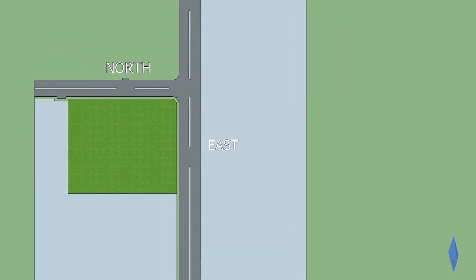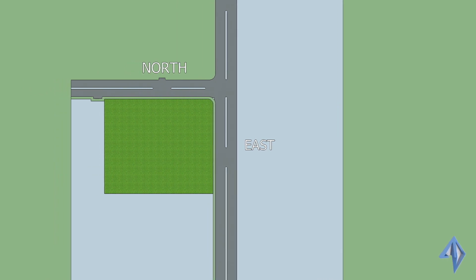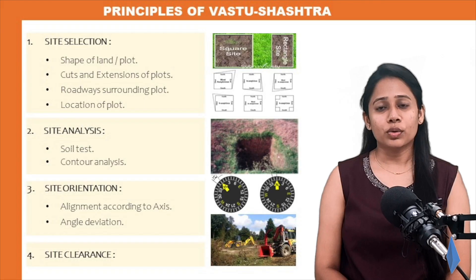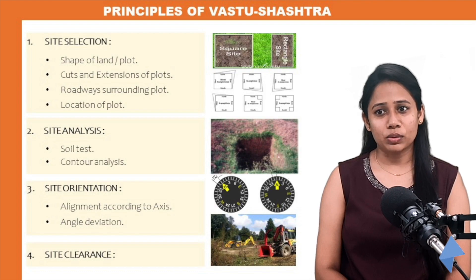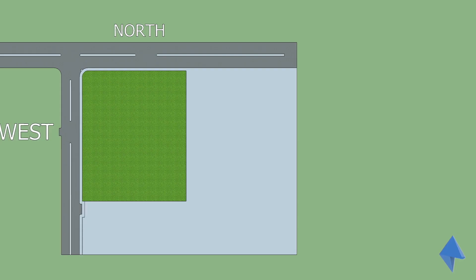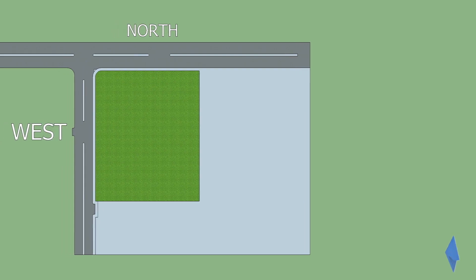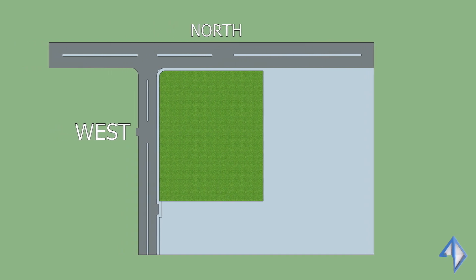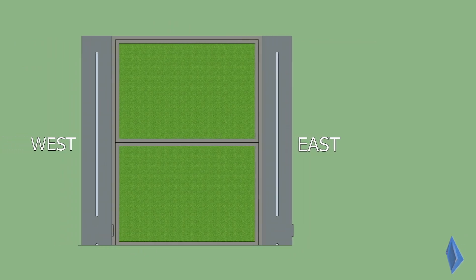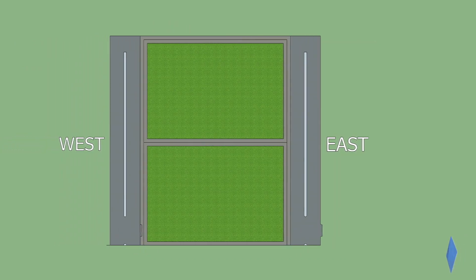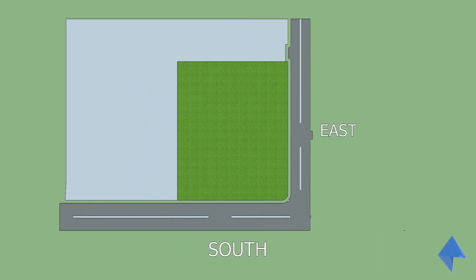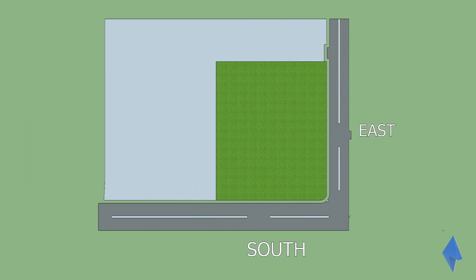Similarly, if you have a roadway on the north or east corner of your plot, that is an auspicious plot. Roadway on north and south should be avoided. Roadway on north and west corner is an average kind of plot. Roadway on west and east is a good plot. Roadway on south and east is an average plot.